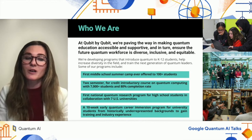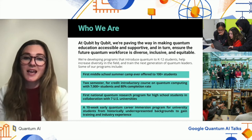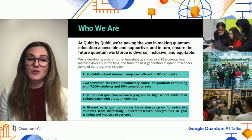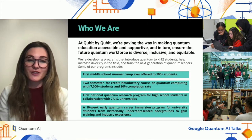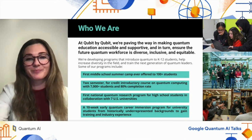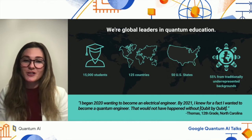We have a range of programs for students in the K-12 space, university students, and current members of the workforce — including the first-ever middle school quantum camp, which we launched last summer; a two-semester, four-credit introductory course on quantum for high school students and above; the first national quantum research program for high school students in collaboration with universities around the U.S.; and an early quantum career immersion program for university students from historically underrepresented backgrounds in STEM. Over the last few years, we've reached over 15,000 students from 125 countries in all 50 U.S. states, with diversity at the heart of everything we do. Over 55% of our students are from traditionally underrepresented backgrounds.